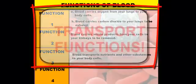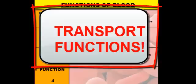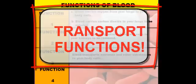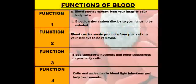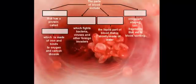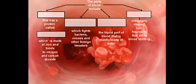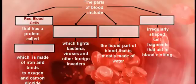So those are our three main transport or movement functions, and our last function has to do with fighting infections. Function four: blood has cells and molecules to fight infections and help heal wounds — that's where white blood cells and platelets come in. As we learned in the last set of class notes, blood actually has four parts, and each part has a specific function.